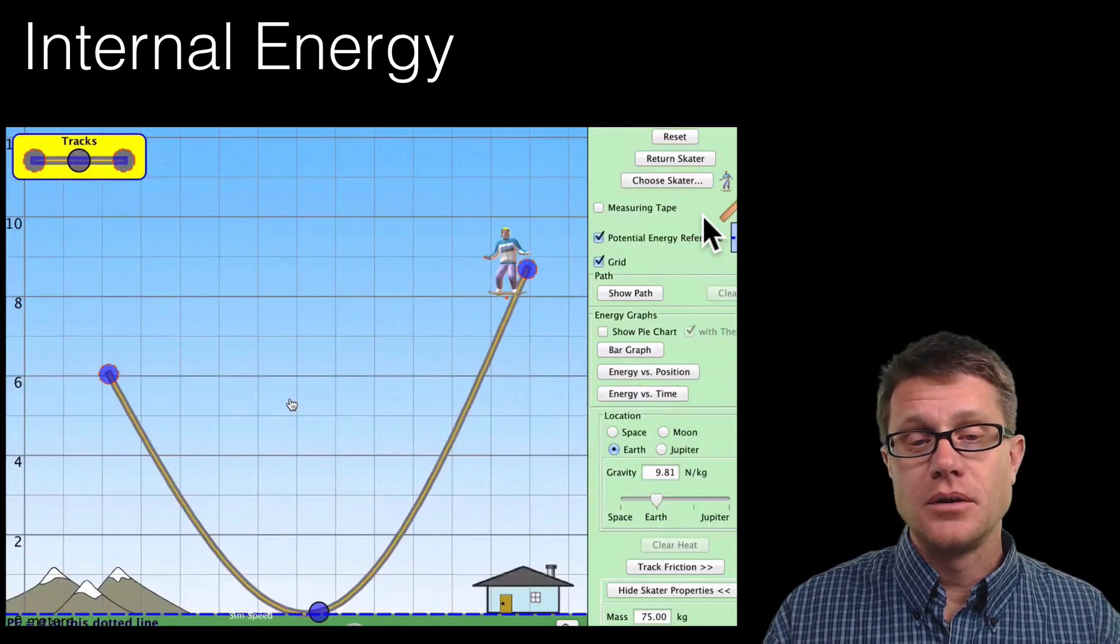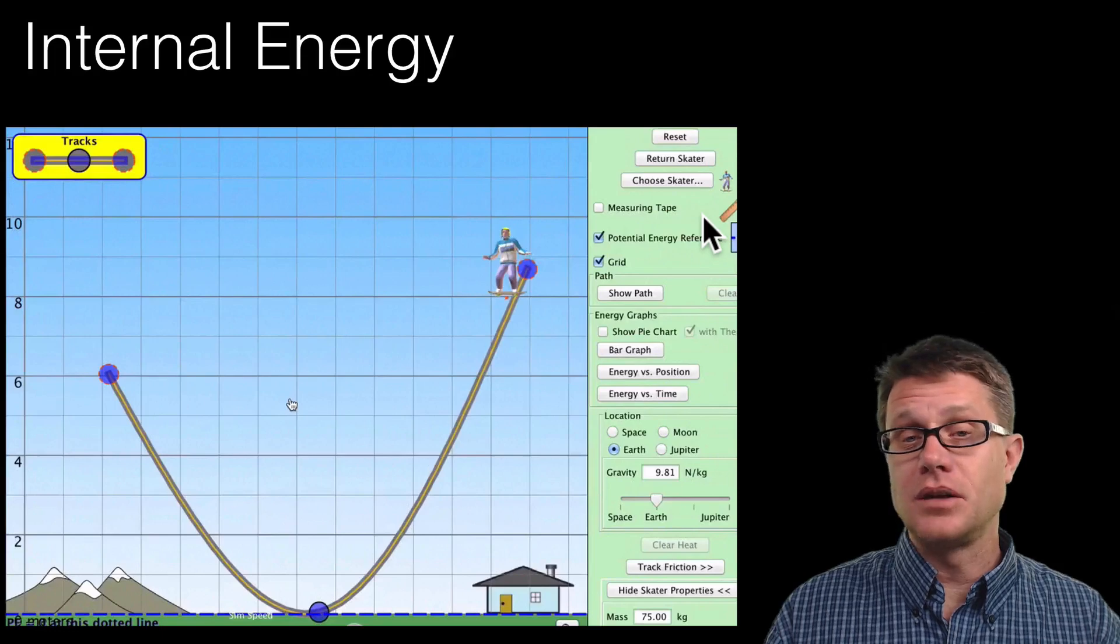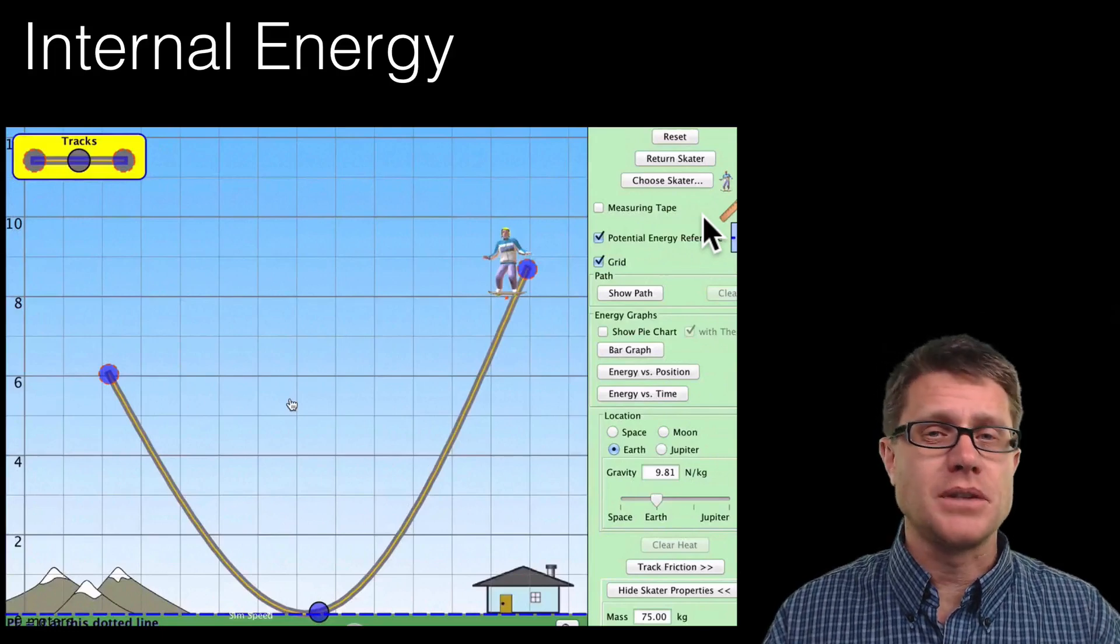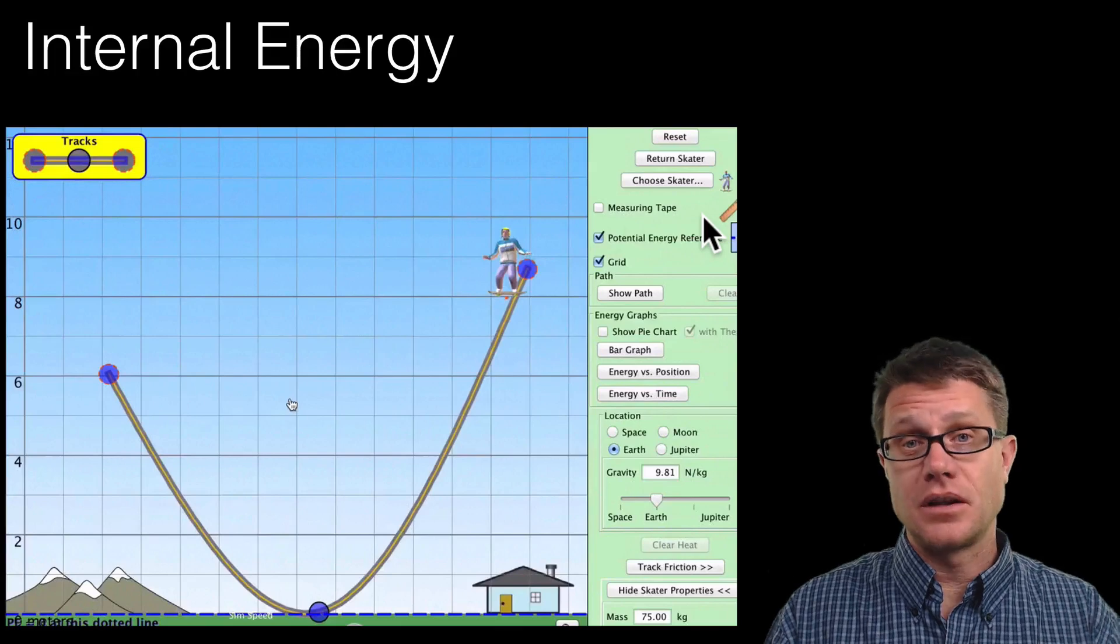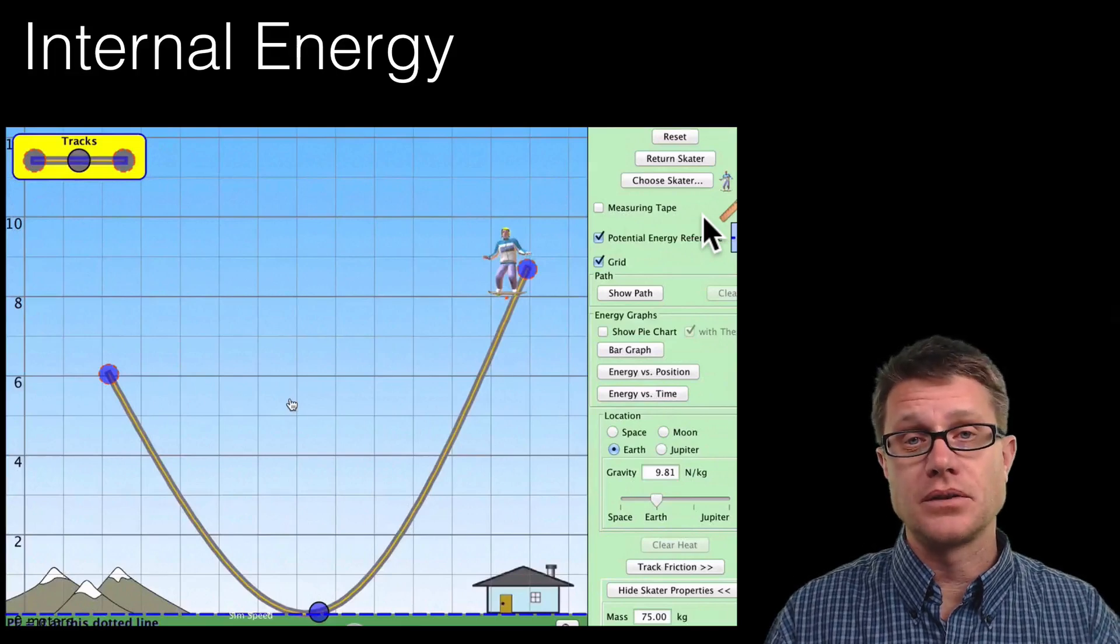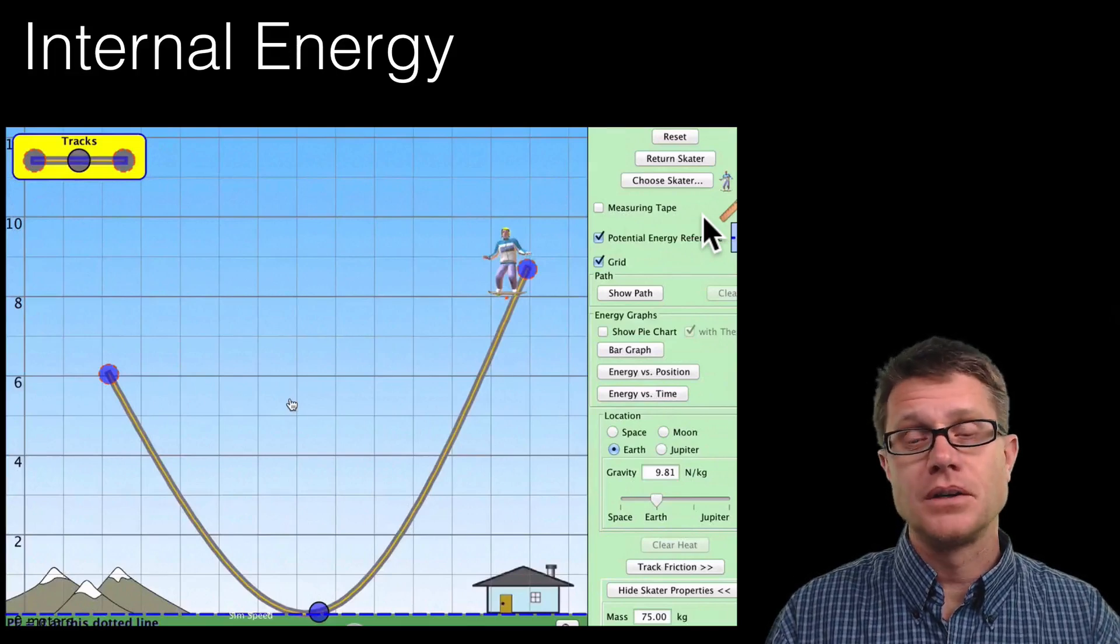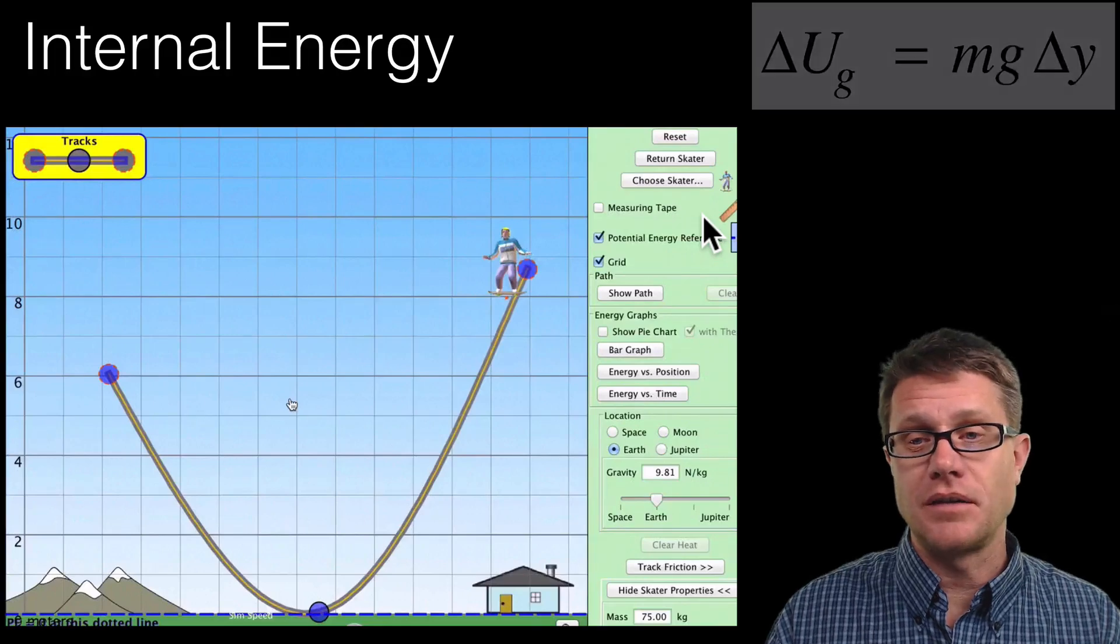Let us say we have a skateboarder who is at the top of the ramp at 8 meters in height. How much potential energy would he have? We know the height. We know since he is on the earth that we know the gravitational field strength. The only thing we have to figure out is what his mass is. He is going to be 75 kilograms.